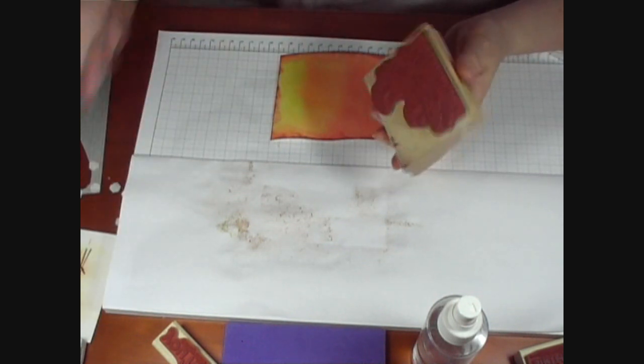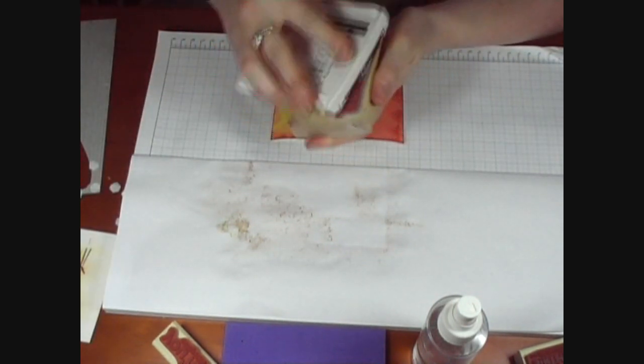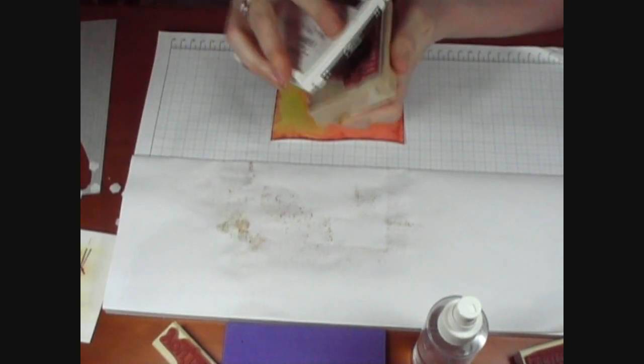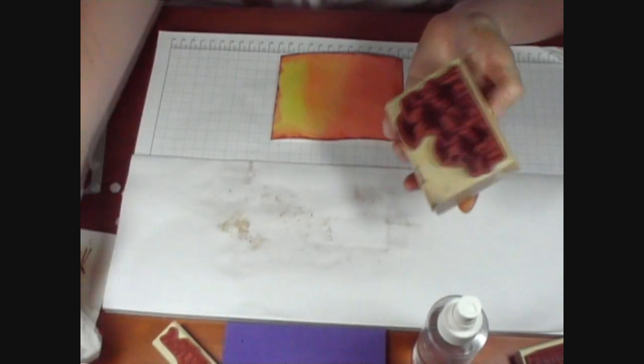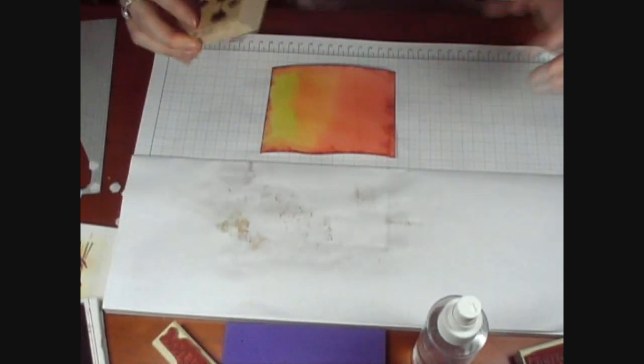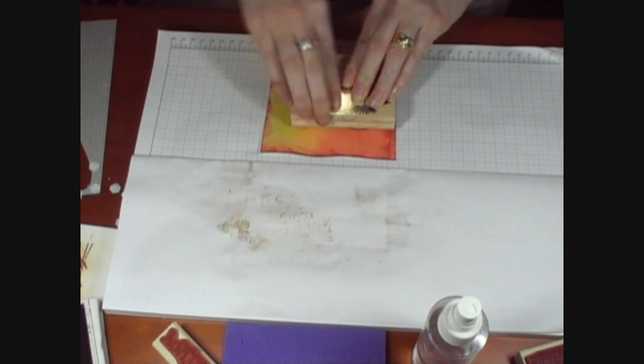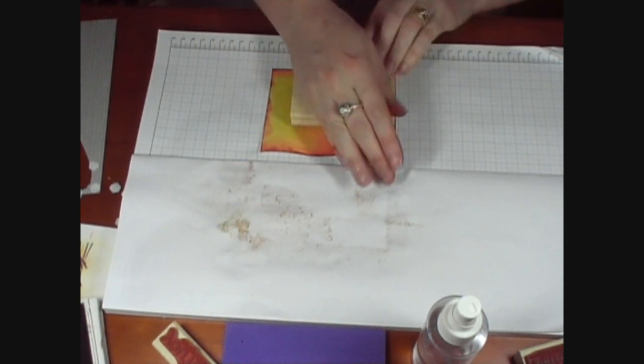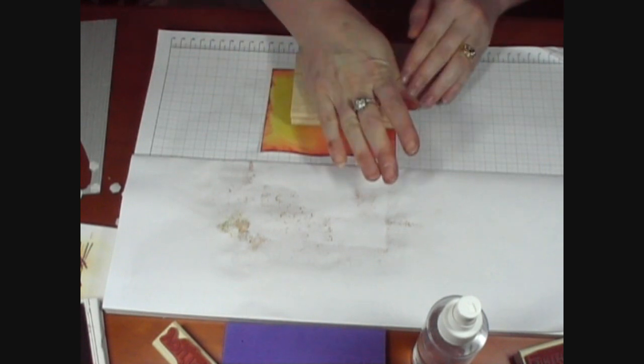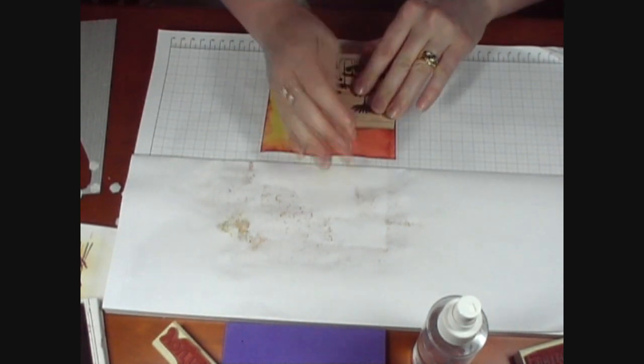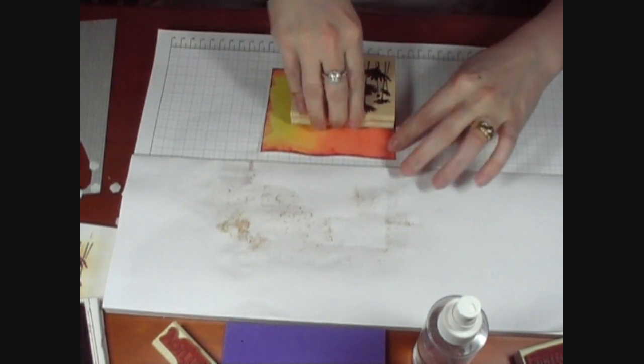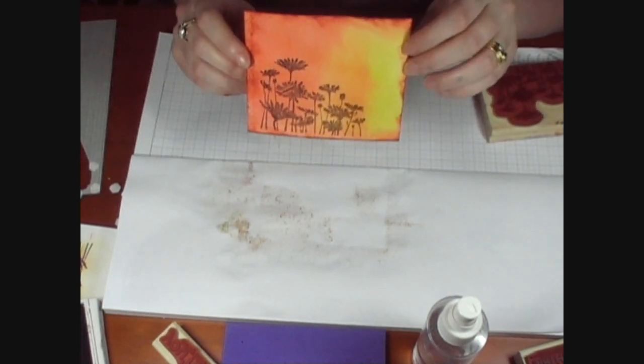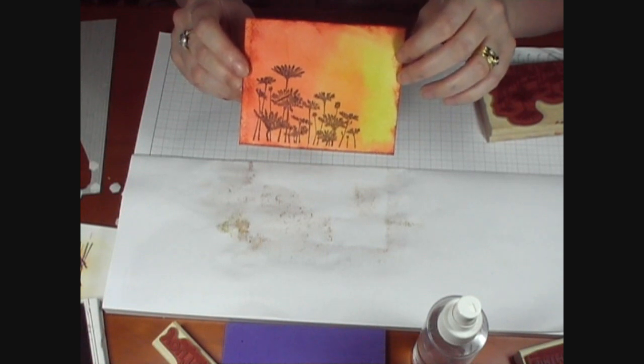I'm just going to use some brown ink, the Chocolate Chip, and put a good coverage on the stamp and stamp that onto the paper. Just make sure you give it a good press. Because the watercolor paper is textured, the image doesn't stamp very clearly, so you need to make sure you've pressed fairly firmly on there. So you can see there we've got the nice little silhouetted image there.